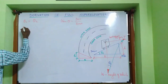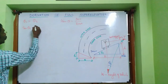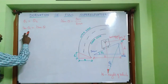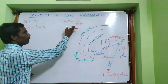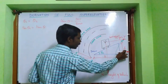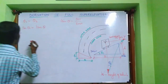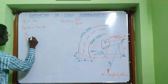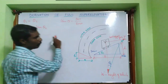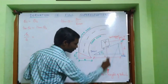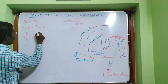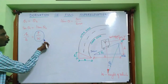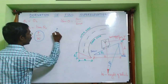Tan theta 1 equals perpendicular over base, where the perpendicular is h and the base is b, so tan theta 1 equals h divided by b. Similarly, tan theta 2 has perpendicular P and base W, so tan theta 2 equals P divided by W. The term P divided by W is known as the centrifugal ratio.